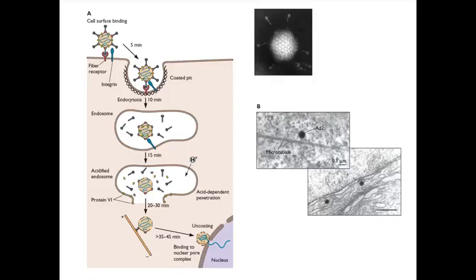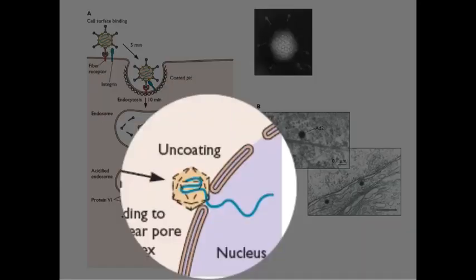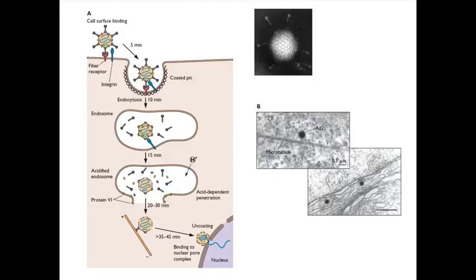So it's partially disassembled. It's not all disassembled, so it's still somewhat intact. It can then get out. It rides down the microtubules to the nucleus, docks onto a nuclear pore, and puts its genome in the nucleus. So a unique strategy for getting out of the endosome. You make a toxin or a protein that pokes holes in it. And again, you have to hide that protein in the intact virion, so it doesn't act in the wrong place.